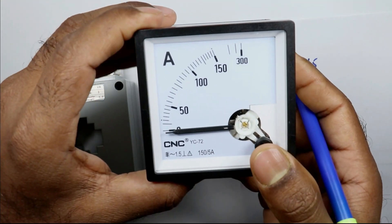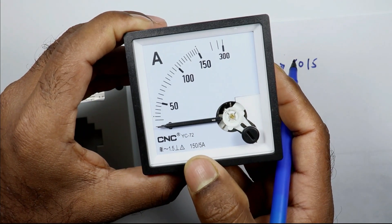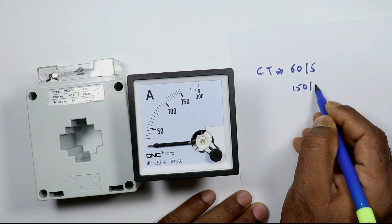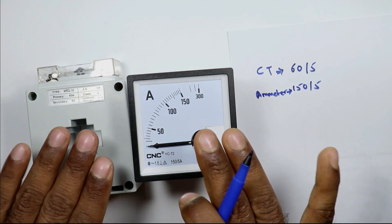Now if we consider this ammeter, you can see 150 by 5 is written here. Ratio for this ammeter is 150 by 5. The ratio is different in both the devices.